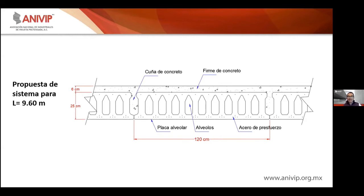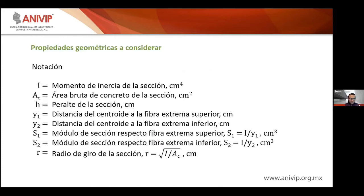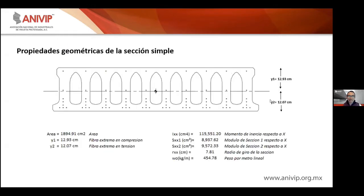Vamos a analizar el panel de losa de 9.60 por 6.95 m, el más largo del proyecto. La propuesta es un sistema de losa con placas alveolares de 25 cm de prefabricado más 6 cm de firme de concreto colado en sitio; la placa alveolar tiene 120 cm de ancho, estándar. Algunas propiedades geométricas necesarias son el momento de inercia, el módulo de sección y el radio de giro.